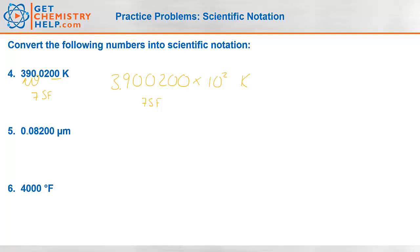How about this one? 0.08200. Okay well the leading zeros aren't significant. The trailing ones here are because of that decimal. So I've got four significant figures here. 8, 2, 0, 0. So I'm going to write 8, 2, 0, 0. And the decimal has to move one two places to get it after that first one. But now I moved it to the right. So it's two places. But to the right means negative two. And then it's micrometers.